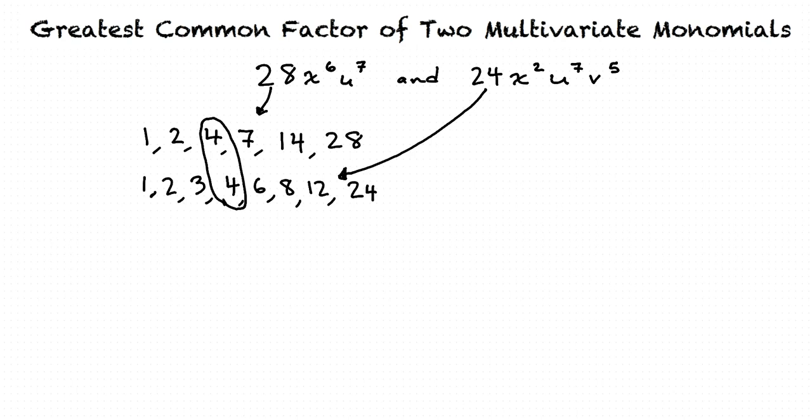For our next part, we find the greatest common factor of the variables. We see that the variables that are common to both expressions are x and u. So v is left out of the greatest common factor. So what do I do with the exponents then?